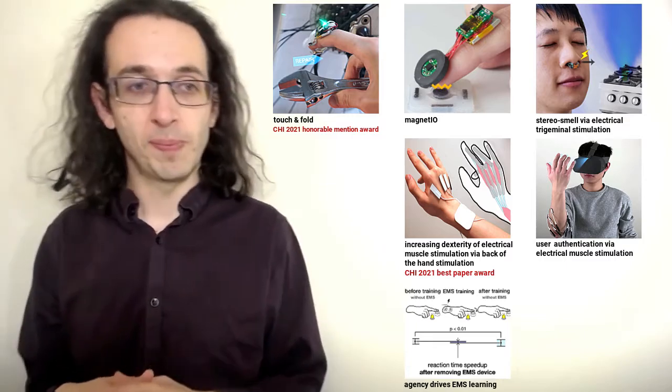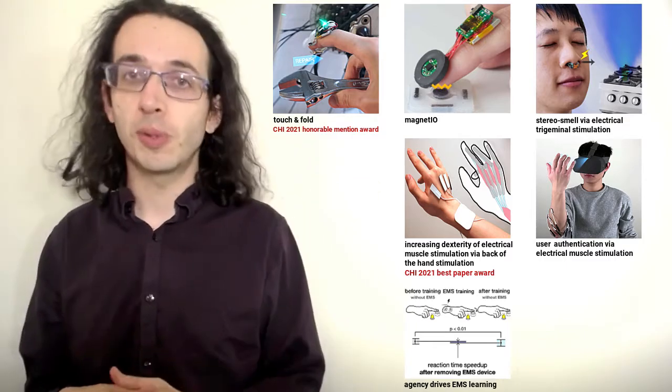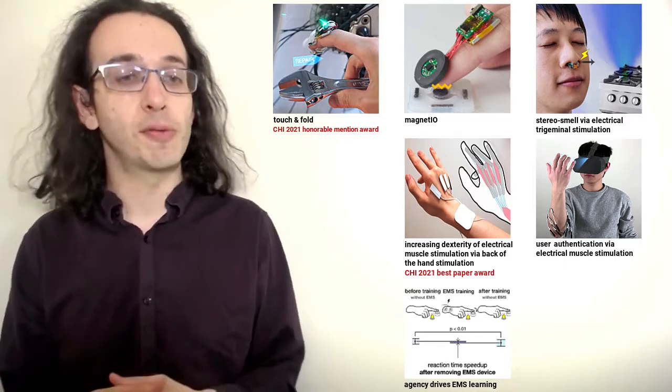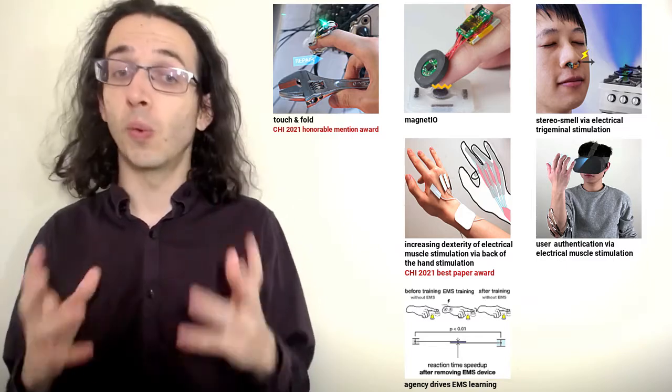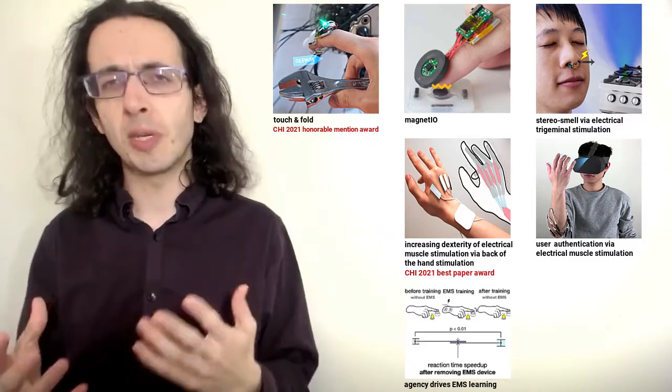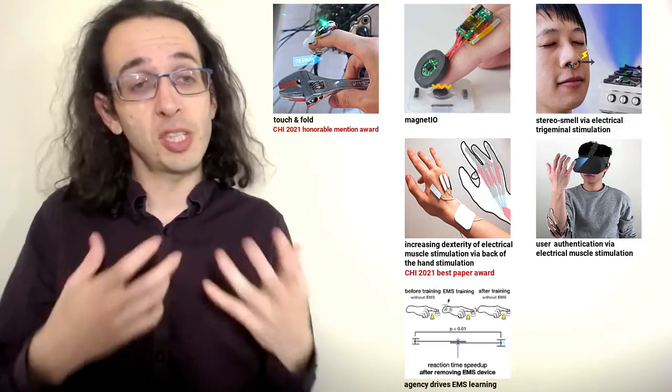The sixth paper, which is presented by my long-term collaborator Shunichi Kazahara from Sony Computer Science Laboratory, investigates a question that my group has been working on for about three or four years. What happens to our sense of agency when our muscles are moved by means of electrical muscle stimulation? Do we feel like we lost control or still feel in control?